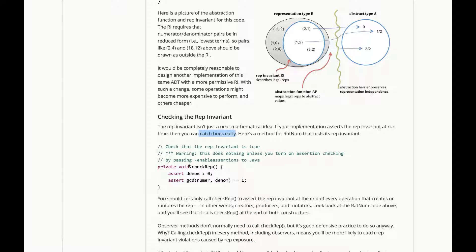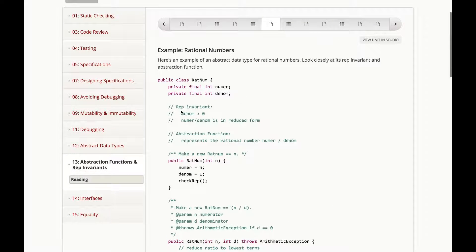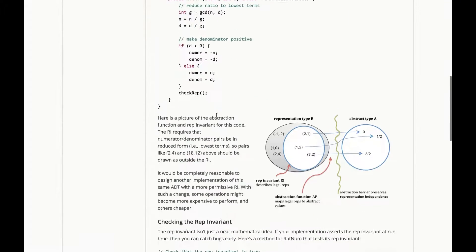Here's a method for RatNum that tests its rep invariant. We'll call it CheckRep. It returns void because it's going to be doing assertions. Note that this does nothing unless you turn on assertion checking.